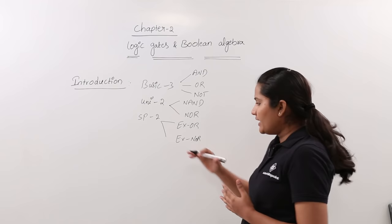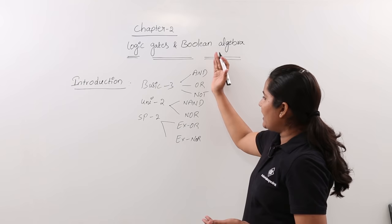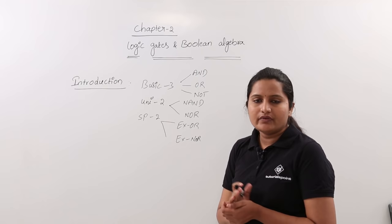We can say XNOR is somewhat a complement gate for XOR. So totally we are having seven gates: AND, OR, NOT, NAND, NOR, XOR, and XNOR. Now we will see the functionality of each and every gate.